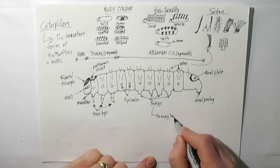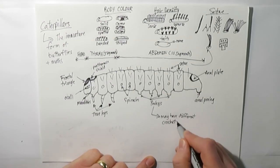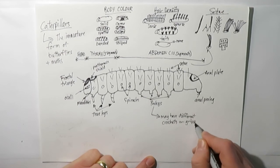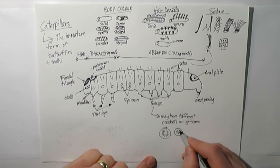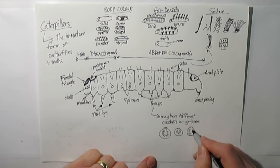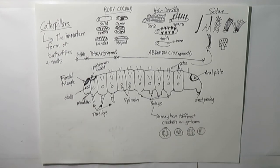If you look at the prolegs, again this is starting to get pretty close, you might see different things that are called crochets or grippers. Basically it's the little grippy feet on the bottom of their abdominal feet. They might be in a circle or in a half circle, a double line or a single line.